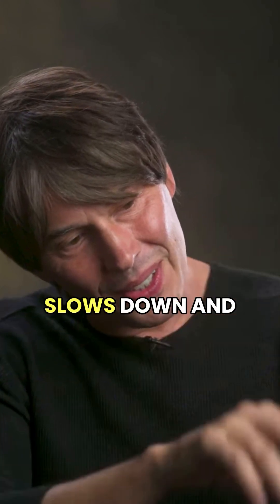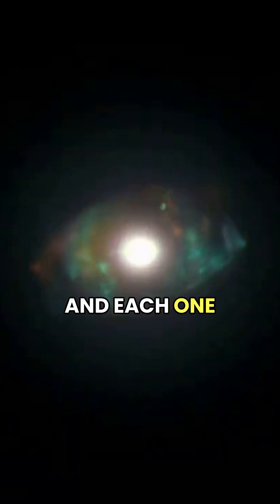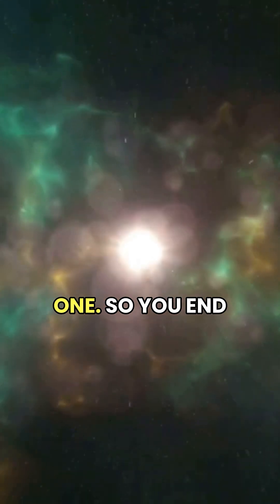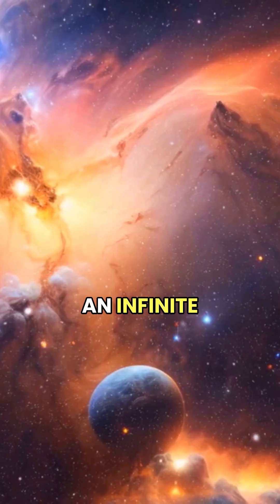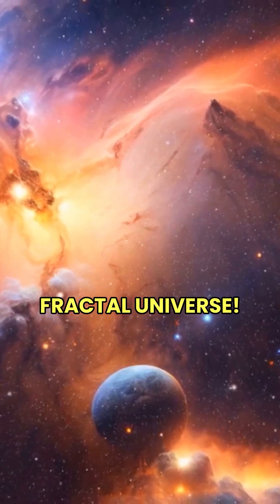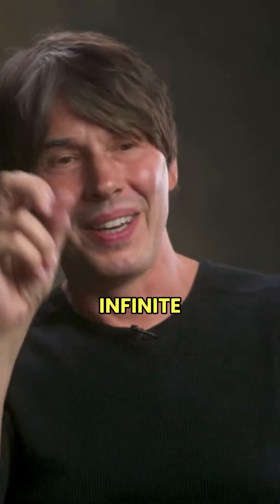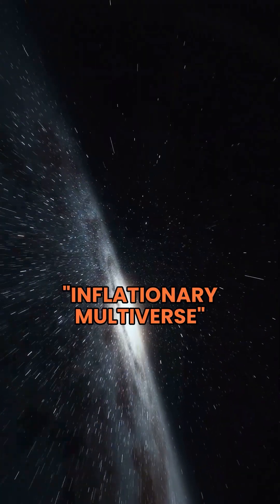And then it slows down and stops in little patches, and each one of those patches is basically a big bang and a universe, of which ours is one. So you end up with this sort of picture of an infinite fractal universe of basically an infinite number of big bangs, and that's called the inflationary multiverse.